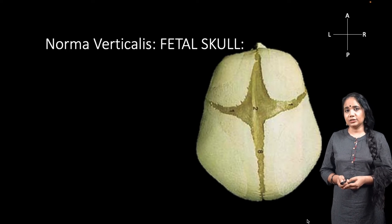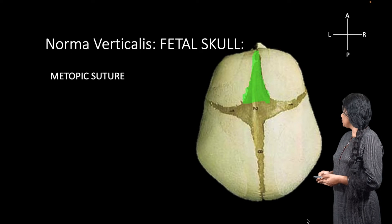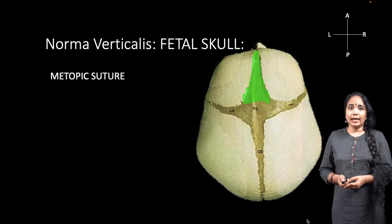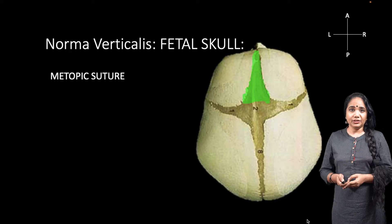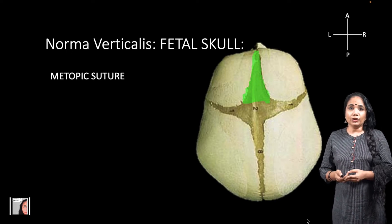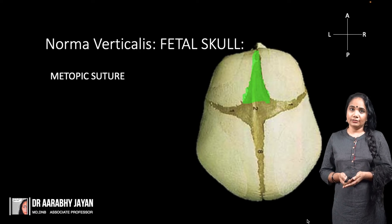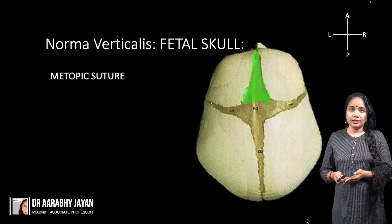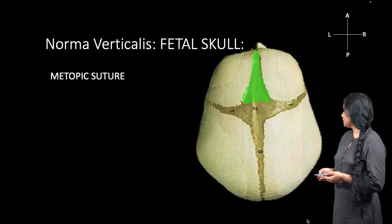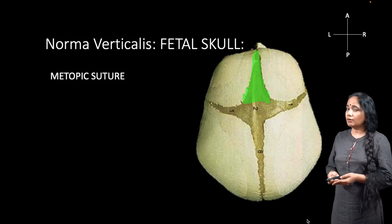There are special features characteristic of the fetal skull in the norma verticalis. The first is the metopic suture, which exists only in fetal or immature skulls. This is because the two frontal bones are still present as two separate halves in the fetal skull. In the adult, they have fused together, so there is no metopic suture — it is a specific feature of the fetal skull.